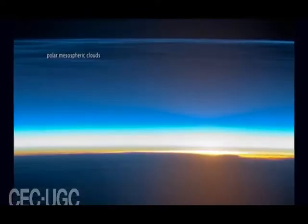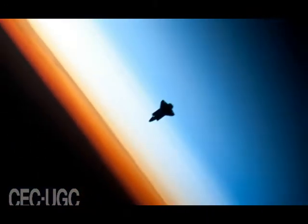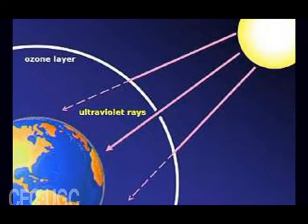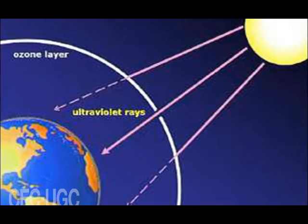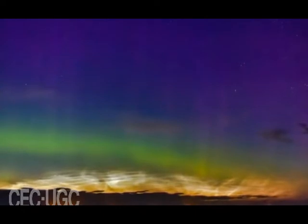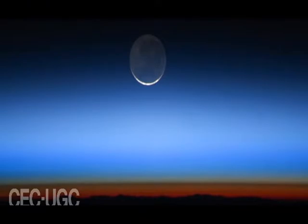Above the stratosphere is the mesosphere, where air temperature again decreases with height. The boundary separating these two layers is called the stratopause. The air temperature decreases with height because there is little ozone at those altitudes to absorb the UV radiation. This layer extends from around 31 miles above the Earth's surface to 53 miles. As one descends, temperatures increase to about 5 degrees Fahrenheit near the bottom of this layer. The gases in the mesosphere are thick enough to slow down meteors hurtling into the atmosphere, where they burn up leaving fiery trails in the night sky. Both the stratosphere and the mesosphere are considered the middle atmosphere.